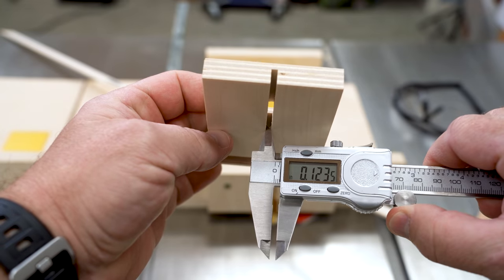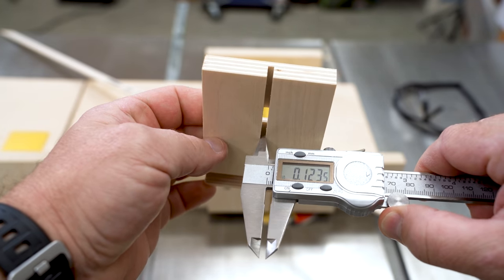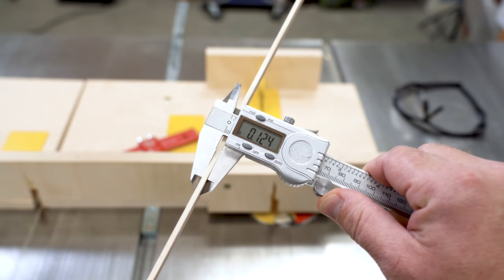What I do know is that the path the blade actually makes is about 0.124, and the shim is around 0.124, and that's a match.